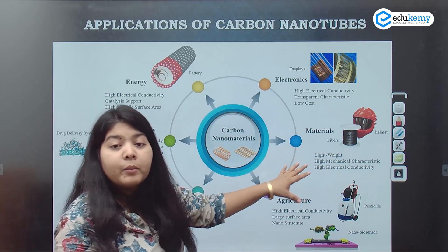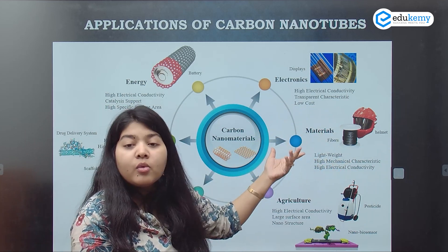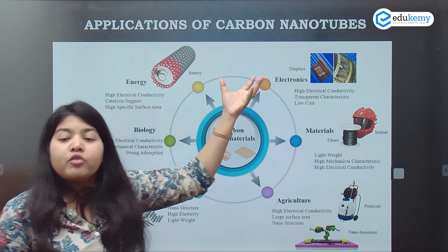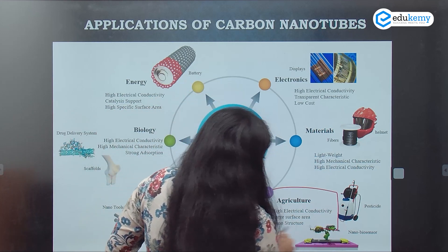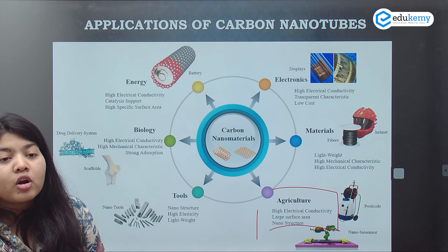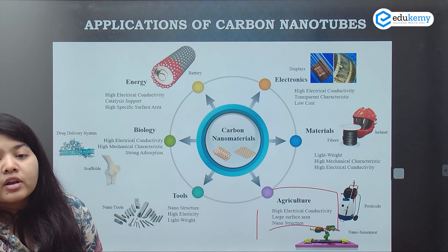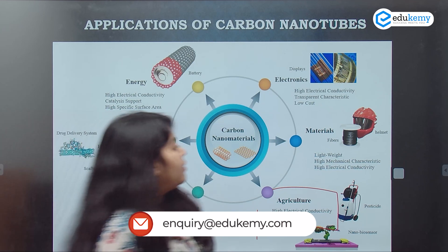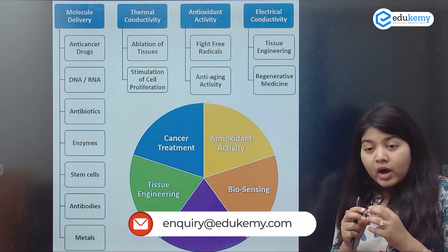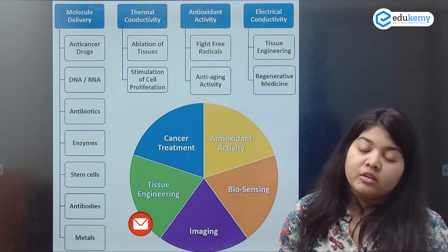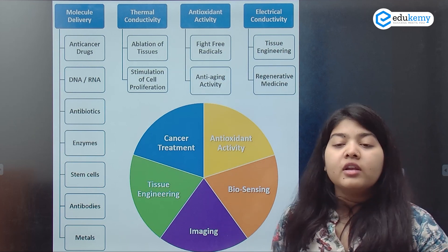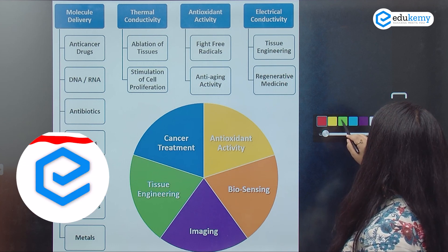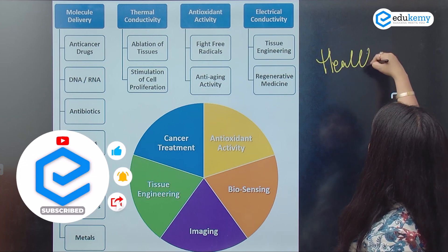Nano materials are also used to make lightweight materials with higher mechanical strength and electrical conductivity — from fibers to wires to helmets. In agriculture, nano fertilizers such as nano urea have been developed, where nano-coated urea increases surface absorption so small quantities can be used across more crops. Nanotechnology in the health sector is also a significant area of application.